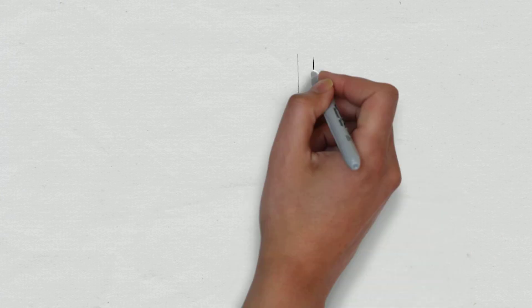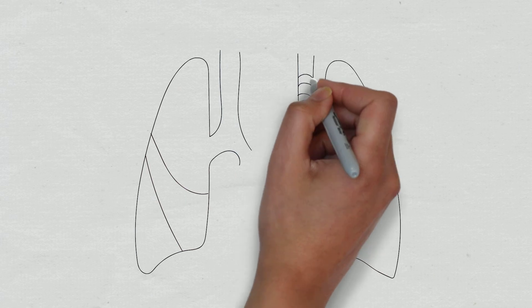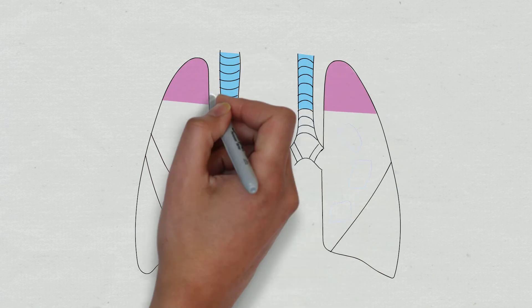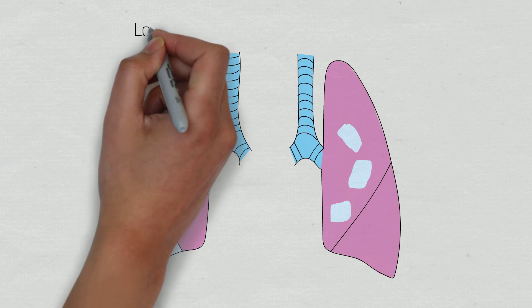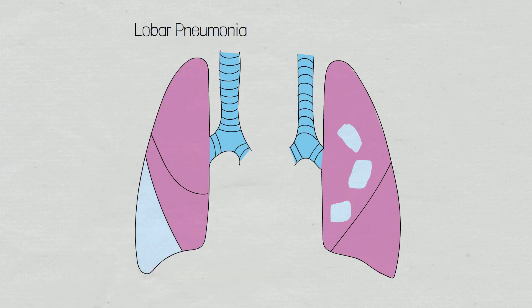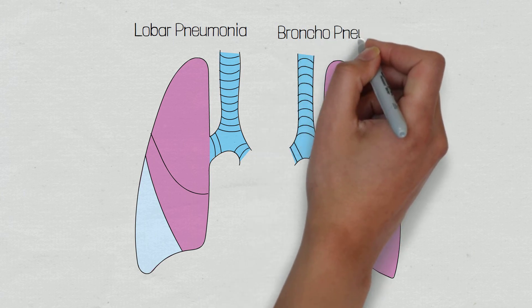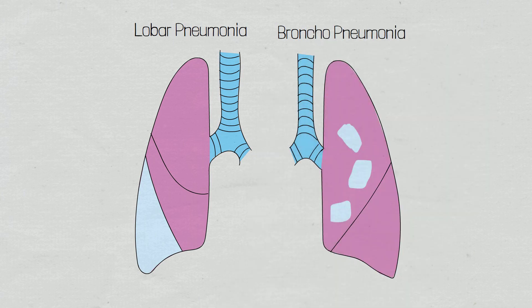Pneumonia can either affect an entire lobe, known as lobar pneumonia, or can be diffuse, known as bronchopneumonia — though this does not mean that the bronchi and bronchioles are infected. Lobar pneumonia will start distally and move more proximally as the disease progresses, whereas bronchopneumonia will start proximally and work its way distally.